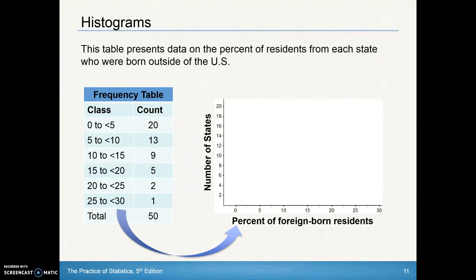So we want to make the histogram for that. Make sure we label our histogram. This one here happens to be, because we're talking about percents, we're going to talk about percents of foreign-born residents.